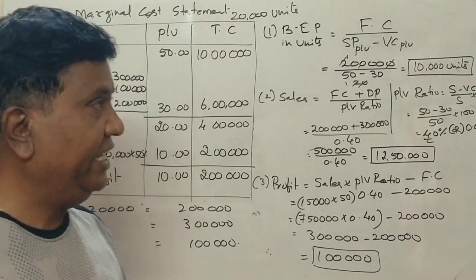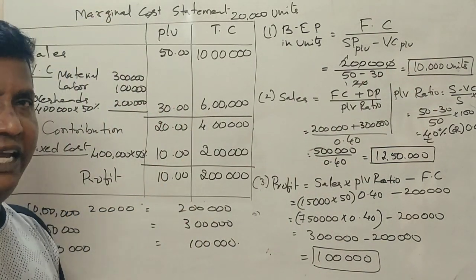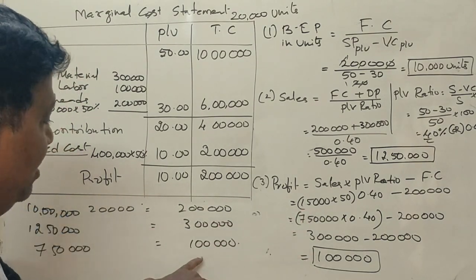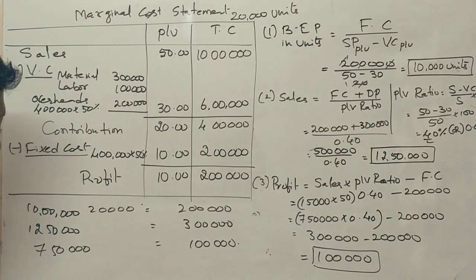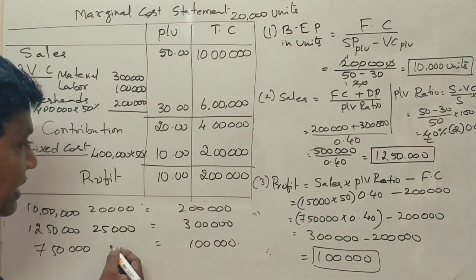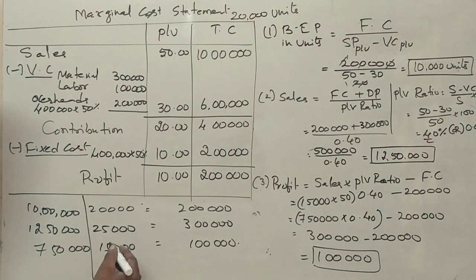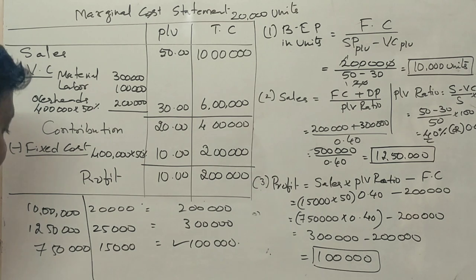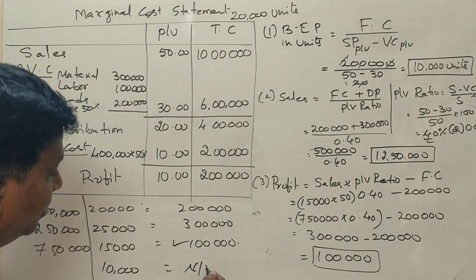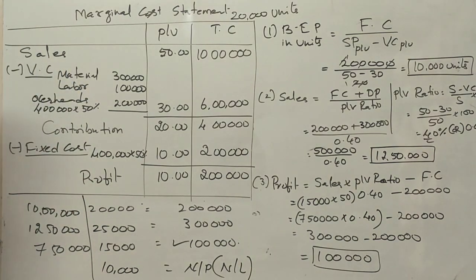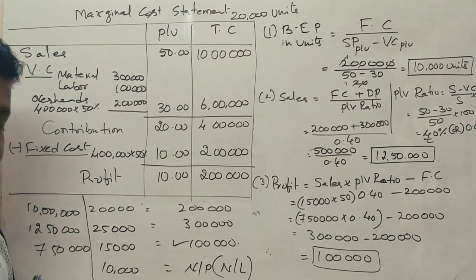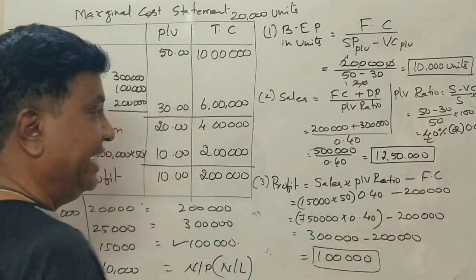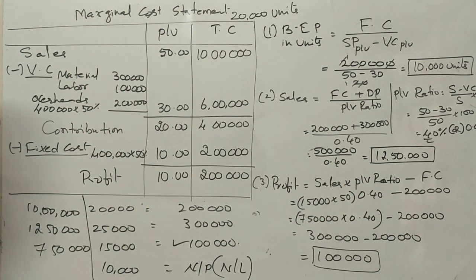So if it's 10,000 units, that is no profit, no loss. 15,000 units, that is 1 lakh profit. 20,000 units, that is 2 lakhs profit. 25,000 units, that is 3 lakhs profit. That is 12,50,000 divided by 50 rupees equals 25,000 units. This is a 7 marks question.